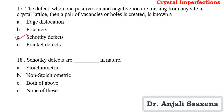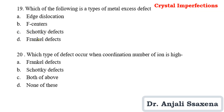Question 18: Schottky defects are what in nature? They are stoichiometric in nature. So the answer is A. Question 19: Which of the following is a type of metal excess defect? Edge dislocation — no. F-centers — yes. F-centers are an example of metal excess defect. When a negative ion leaves its lattice site and an electron occupies that site to maintain electrical neutrality, that is an F-center. Schottky and Frenkel defects are point defects. So the answer is B — F-centers.